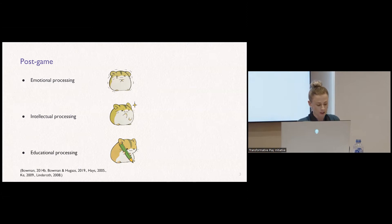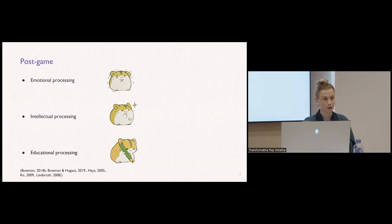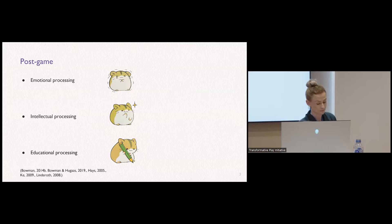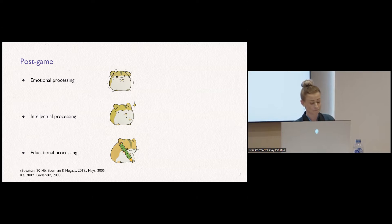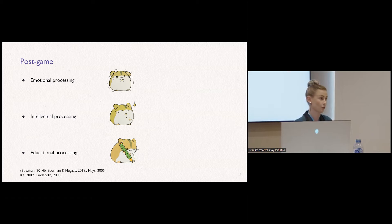Post-game can be split into three parts. First, emotional processing — activities focused on the emotional content of play and the relevant associations that emerge from it. Examples include connecting game events to aspects of one's personal life, or helping players articulate emotions, thoughts, or relationships that came up in the game. Second, intellectual processing — activities focused on intellectualization of the game and its relevance to other domains of knowledge and/or experiences.